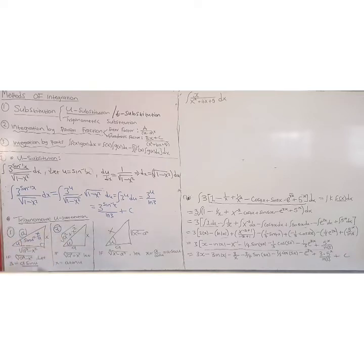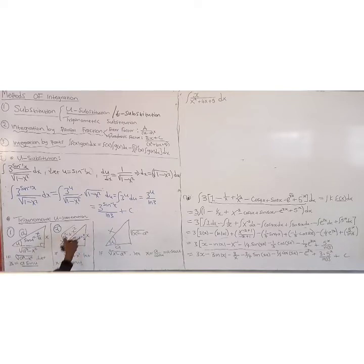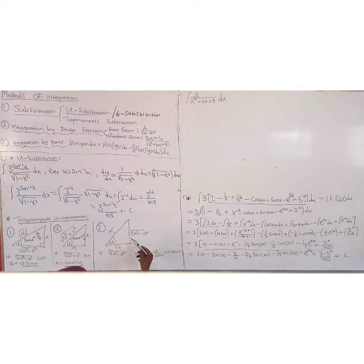In the second diagram, the adjacent side is a, the opposite is x, and the hypotenuse is the square root of a squared plus x squared. Whenever we see the square root of a squared plus x squared, we can let x equal a tan(u), since tan(u) equals x over a. For the third triangle, a is the adjacent side, x is the hypotenuse, so whenever we see the square root of x squared minus a squared, we let x equal a sec(u).